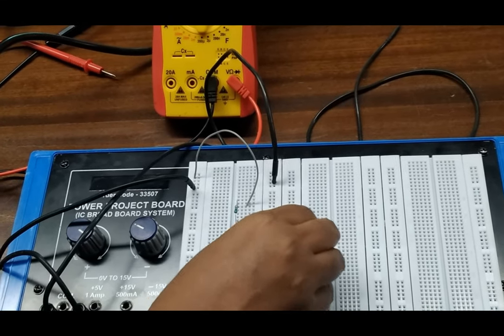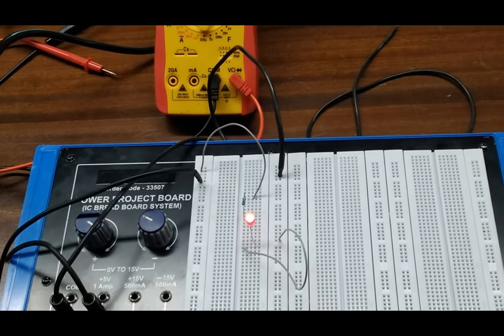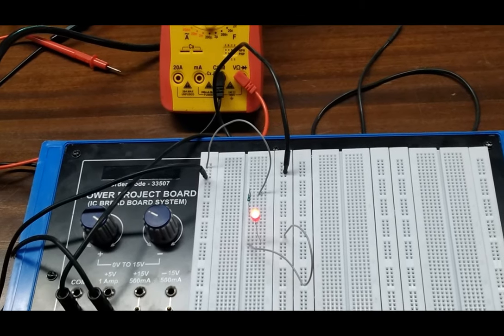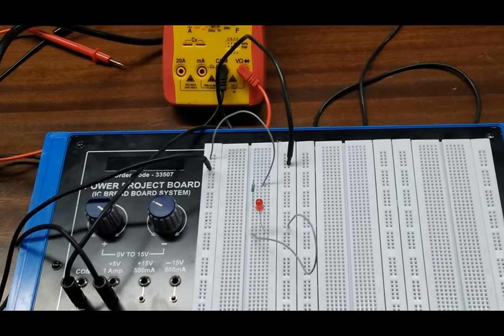Now turn on the kit and we can see the LED is glowing as there is 5 volt supply going to the LED. So like this you can perform different types of experiments with the help of this breadboard.